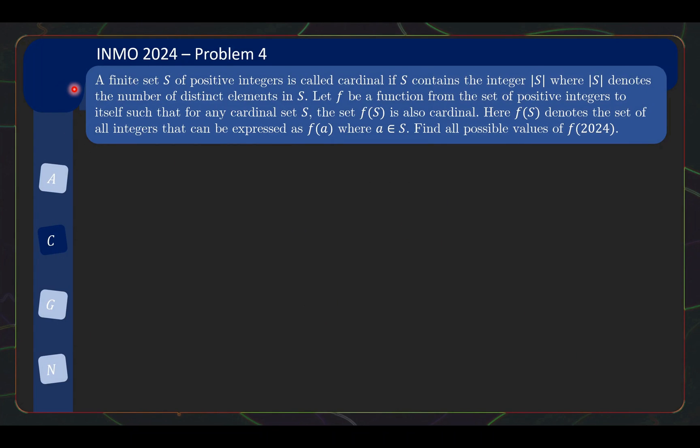So over here we have a combinatorics problem as follows. This problem might be a little bit confusing at first, but I'll try and break down what each sentence is talking about. A finite set S of positive integers is called cardinal if S contains the integer |S|, where |S| denotes the number of distinct elements in S. So what does this mean? A set is cardinal if it has N elements, the number N is also inside it.